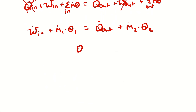I can expand the theta term. Remember that theta includes specific enthalpy, specific kinetic energy, and specific potential energy. Neglecting changes in kinetic and potential energy means that whatever the kinetic energy is at the inlet, it is the same at the outlet — so KE at state 1 and KE at state 2 are the same. It's important to note that I'm not saying there is no kinetic energy; I'm saying it isn't changing. Because it appears on both sides of the equation, it disappears. It's not that there is no kinetic energy — it's that there is no change in kinetic energy.